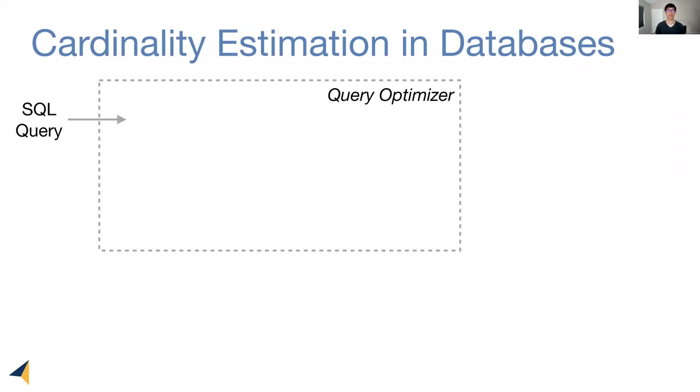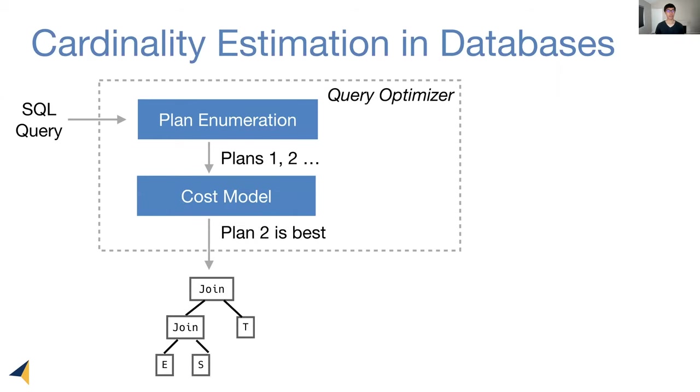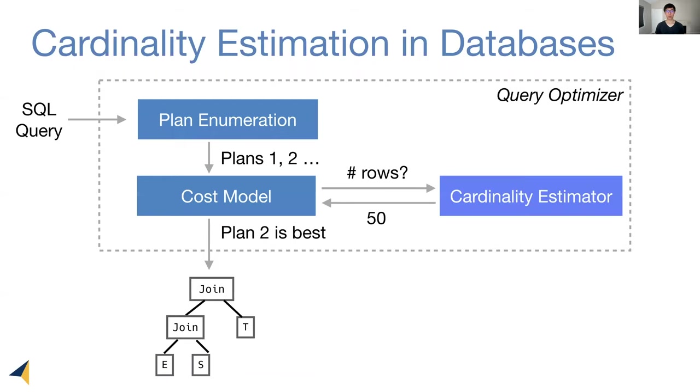Databases heavily rely on cardinality estimation. The most prominent use is in the query optimizer. Given a query, we enumerate many candidate plans. The optimizer relies on the cost model to pick out the best plan. In order to do so, the cost model queries a cardinality estimator asking for the estimated number of rows for each partial plan. Another important use case is resource allocation where we want to allocate compute resources to execution plans based on their estimated cardinalities.